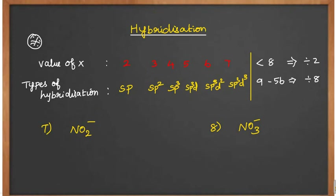So far we discussed molecules; now radicals are there. If it is a negative charge, at the end you have to add. If it is a positive charge — like NH₄⁺ — you have to subtract from the x value. Let's discuss.